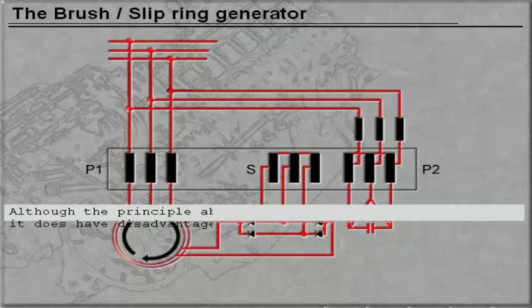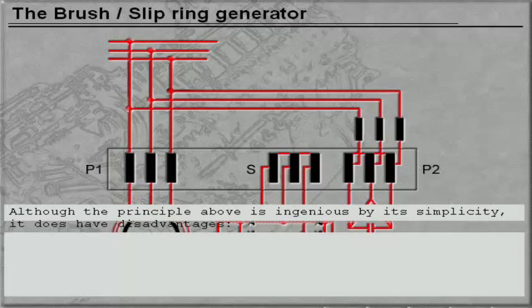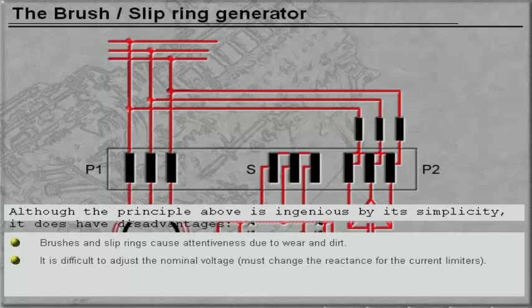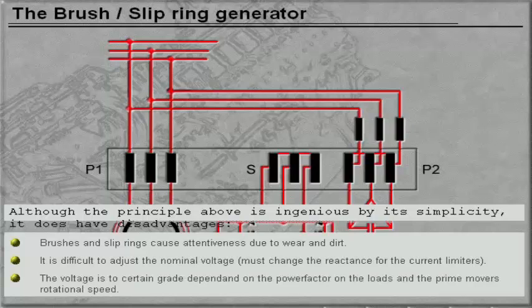Although the above principle is ingenious due to its simplicity, it does have disadvantages. Brushes and slip rings cause attentiveness due to wear and dirt. It is difficult to adjust the nominal voltage. The voltage is to a certain degree dependent on the power factor on the loads and the prime mover's rotational speed.